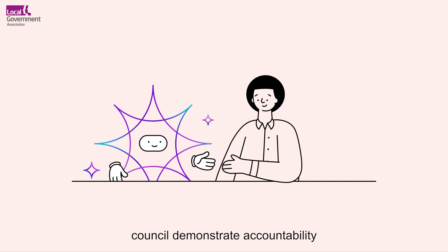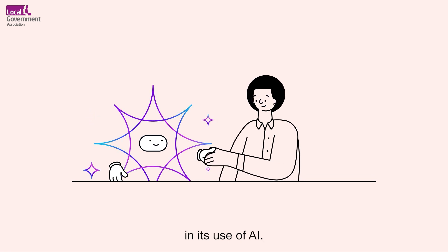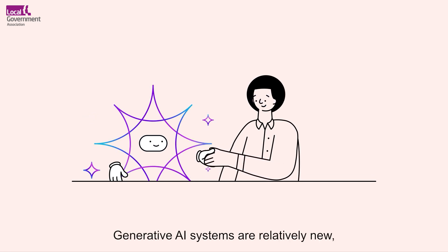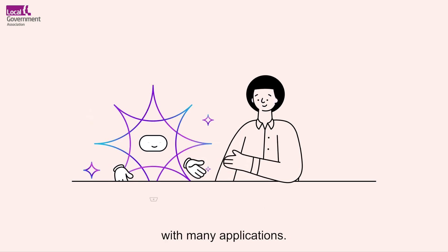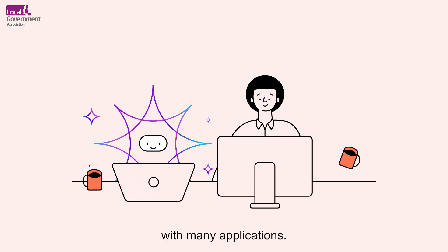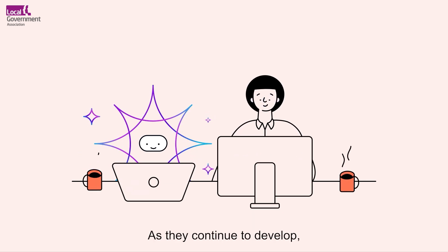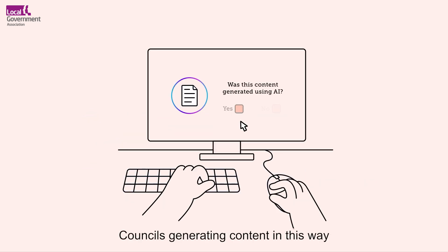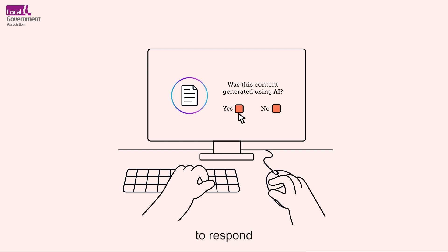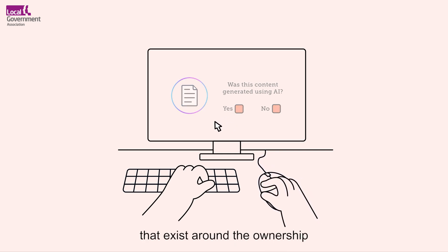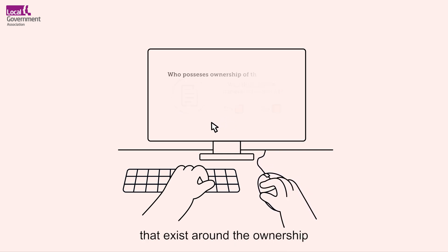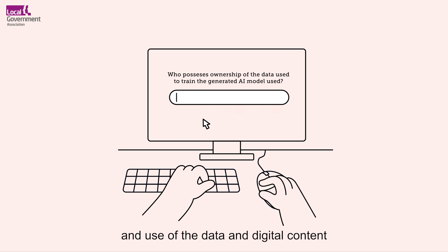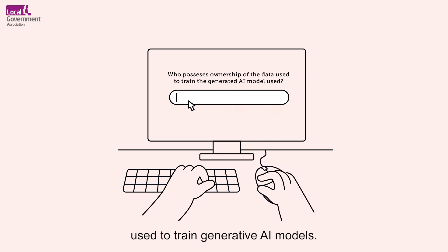How might your council demonstrate accountability in its use of AI? Generative AI systems are relatively new, and they are powerful tools with many applications. As they continue to develop, we can expect to see many more innovative uses. Councils generating content in this way must foster accountability to respond to a range of questions that exist around the ownership and use of the data and digital content used to train generative AI models.